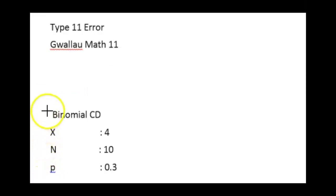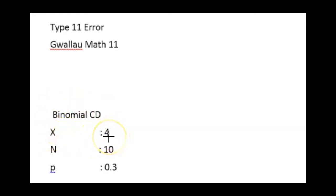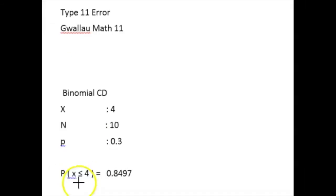Using the Classwiz binomial cumulative distribution, feed in x equals 4, n equals 10, and p equals 0.3. Pressing equals gives the probability that X is less than or equal to 4 as 0.8497. This is the Type 2 error probability. Note this is a very high probability.